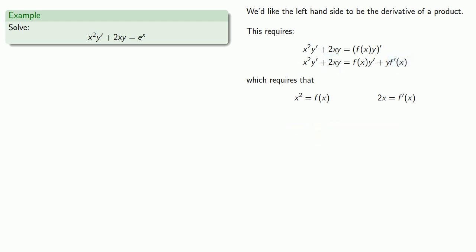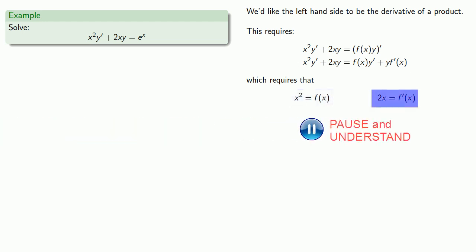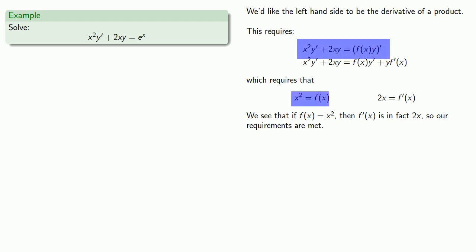So if we want the left-hand side of the differential equation to be the derivative of a product, we require that x² be f(x) and 2x be f′(x). Here's the important step: if f(x) is x², then f′(x) is in fact 2x, so our requirements are met, and the left-hand side is the derivative of a product — namely x² times y.